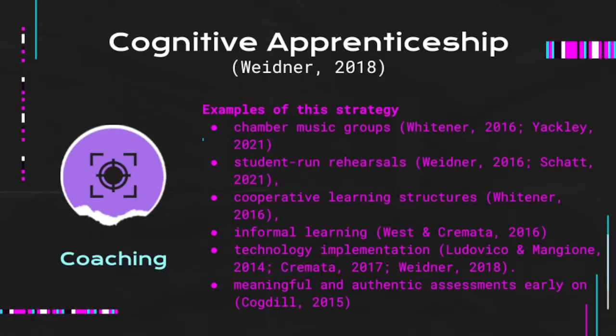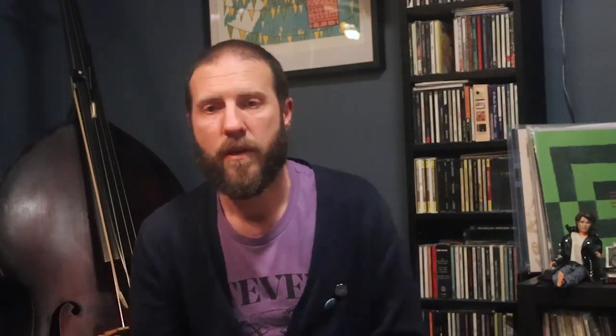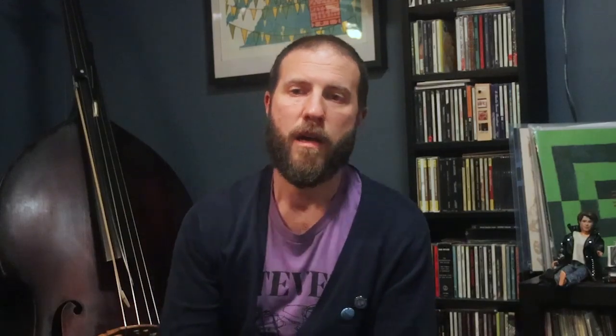The second phase of cognitive apprenticeship is coaching. The teacher steps aside and allows students to engage in critical thinking and decision making that have been previously modeled. Examples include chamber music groups, student-run rehearsals, informal learning, technology implementation, and meaningful authentic assessments so students know where they are in their learning and what to do to improve. This type of learning is messy and not always linear. Environmental strategies might include de-emphasizing concerts and focusing on the experiences leading up to them, providing opportunities for social connections, rapport building, developing skills for music making, and shifting feedback away from talent toward persistence and effort.